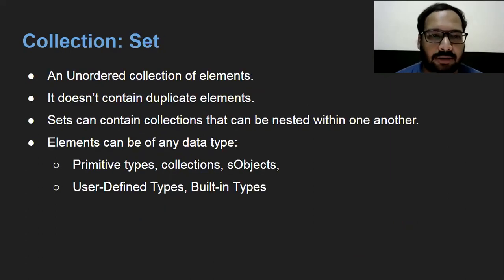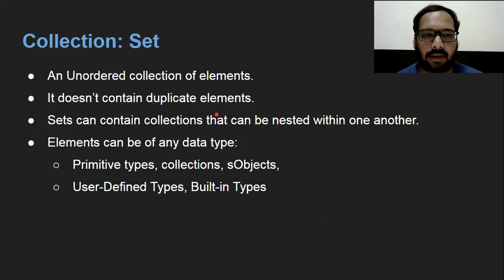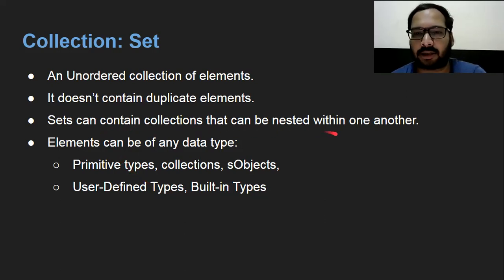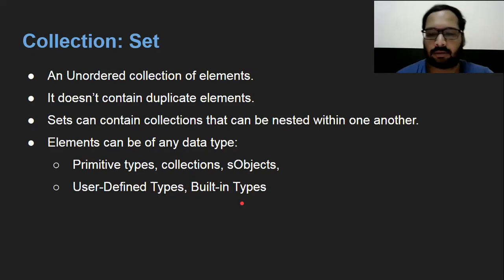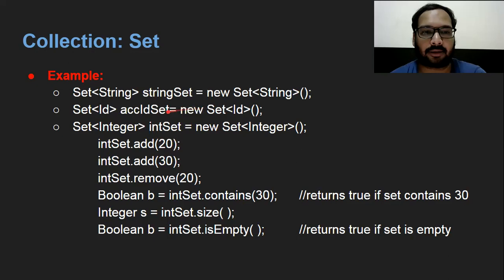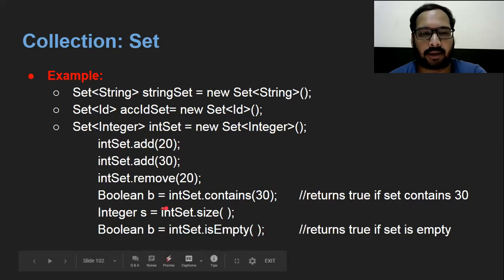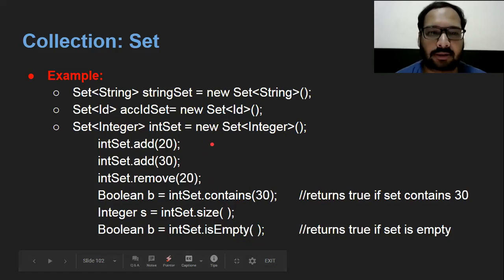Next comes Set. Set is an unordered collection of elements — it does not contain duplicate elements, unlike List. Set can contain nested collections, and elements can be of any data type: primitive, collection, SObject, user-defined, or built-in. You can use add() to add values, remove() to remove values, contains() to check if a value exists, size() to get the size, and isEmpty() to check if it's empty. A separate video will explain Set in detail.